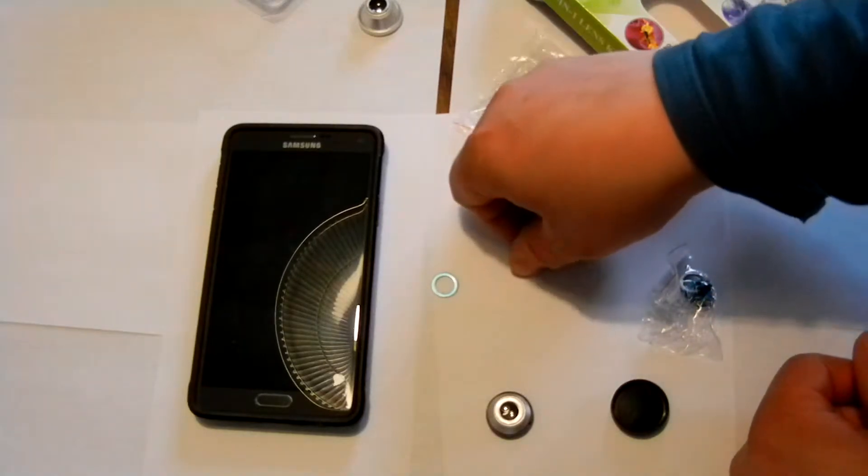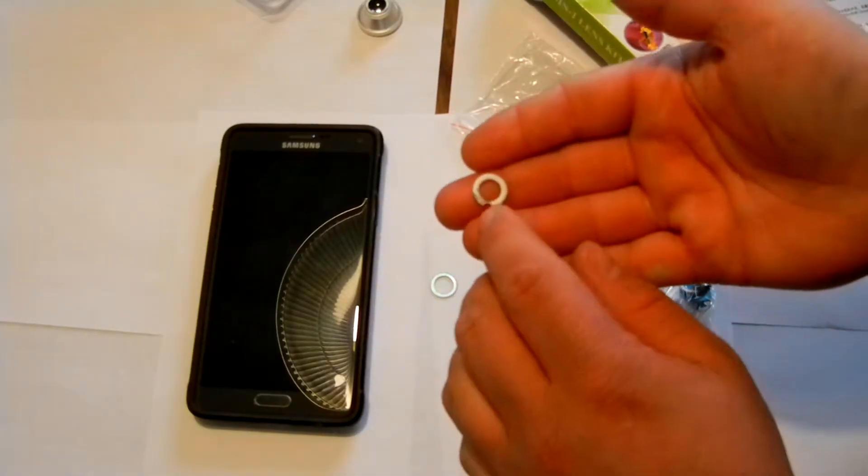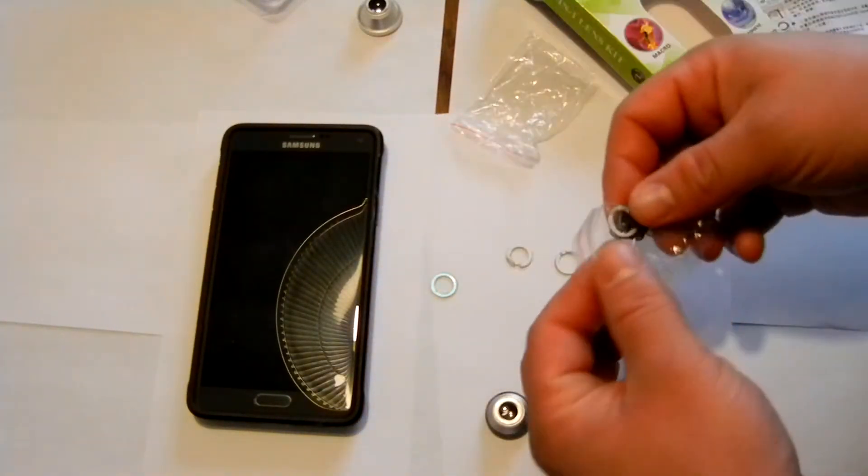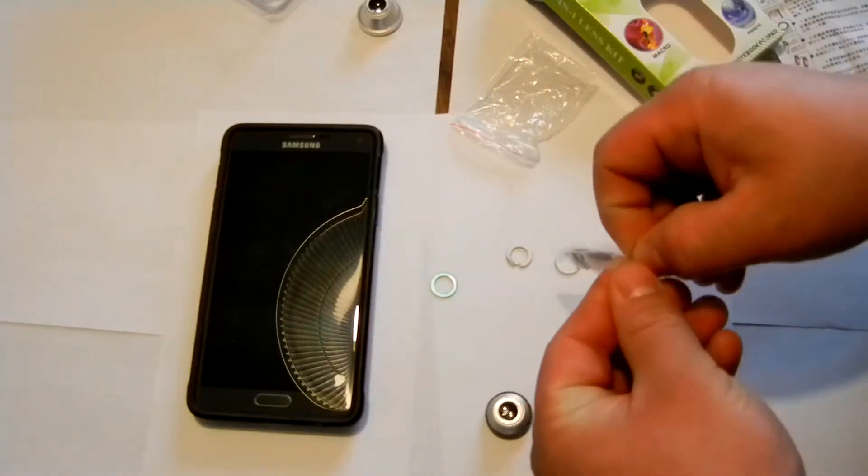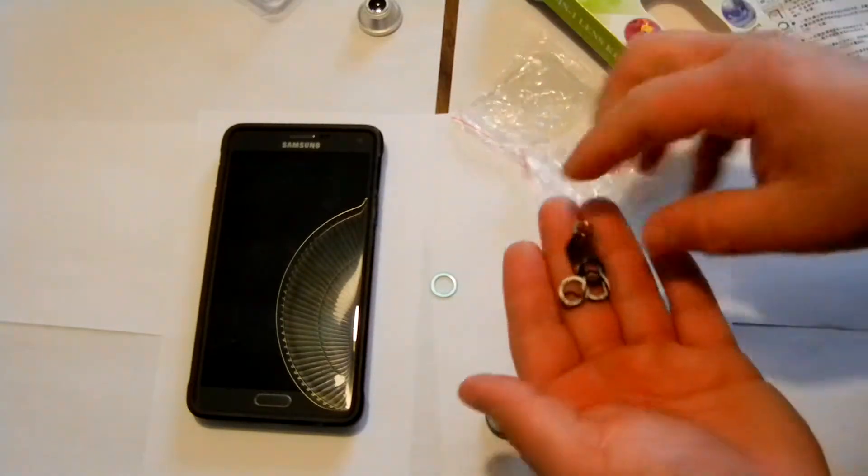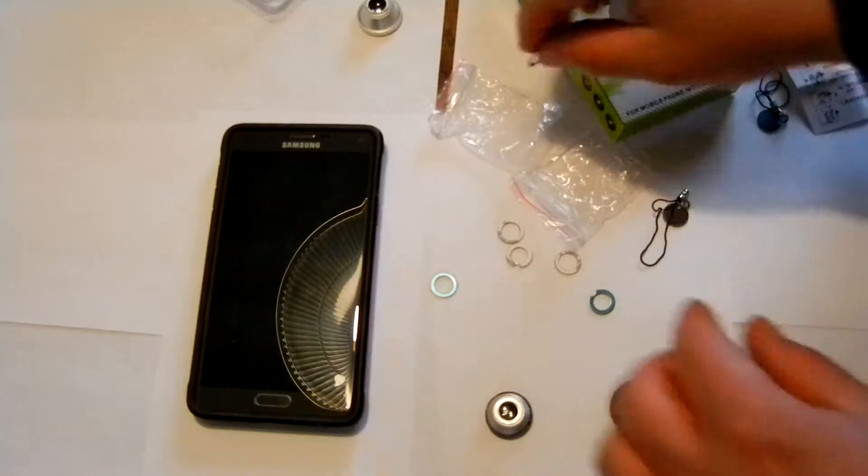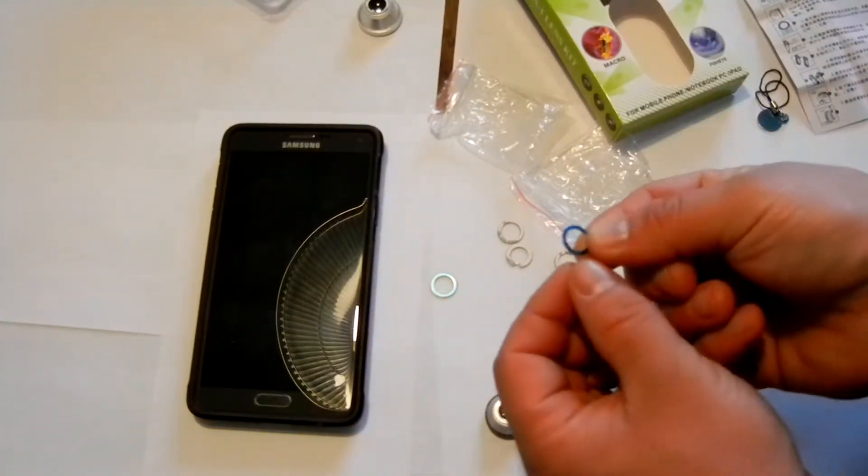And you've got your, like, your iPhone-type ring. It's got the cutout for the flash because the flash is so close to the lens. And there's different rings here. There's a whole bunch of spares as well. You've got different sizes.